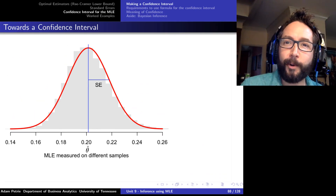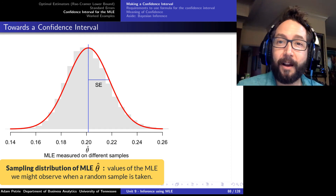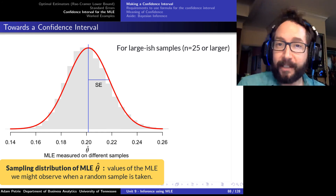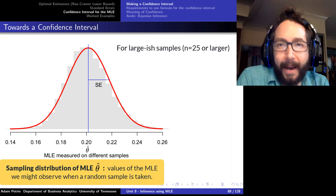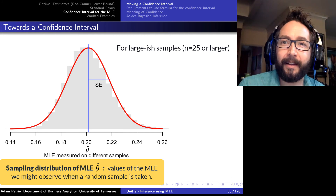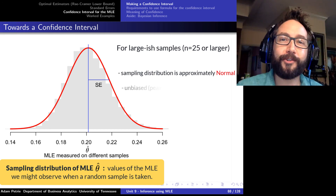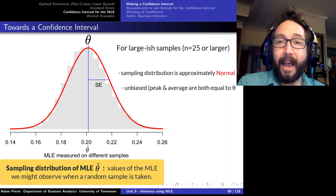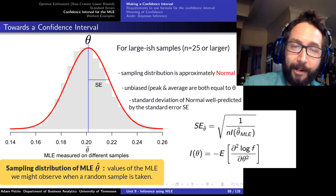What we're going to do is exploit the theoretical properties of the sampling distribution of our maximum likelihood estimate. We know that for relatively large samples, the sampling distribution of the MLE — the possible values of the MLE that we might measure when we collect data — has a normal distribution. The peak of that normal distribution is theta, the true value of the probability parameter, with a standard deviation we can calculate from the Fisher information.